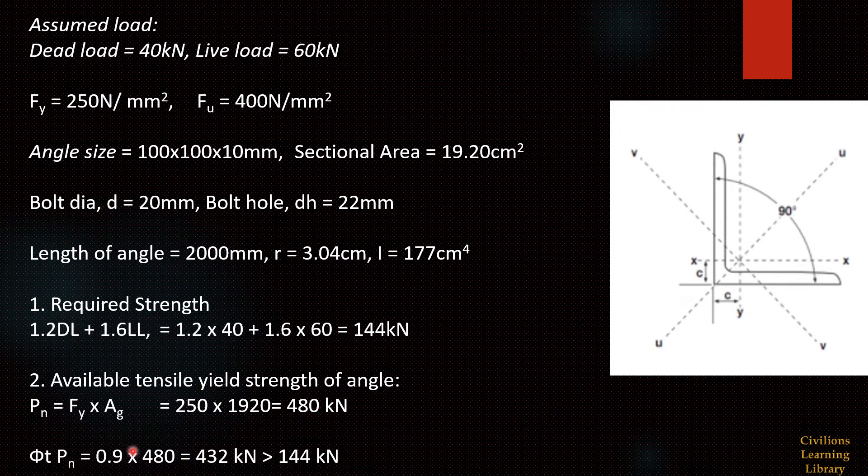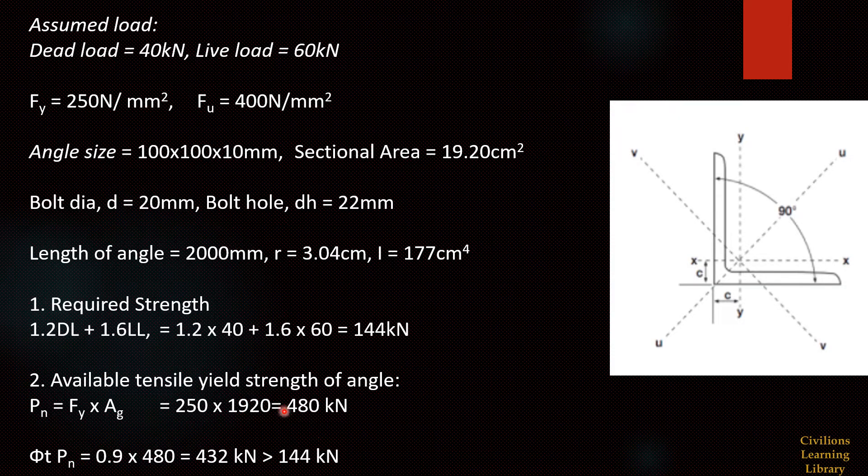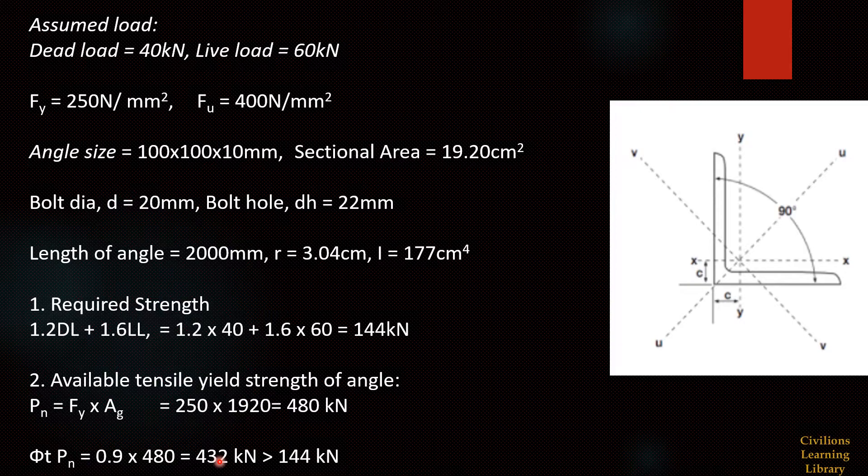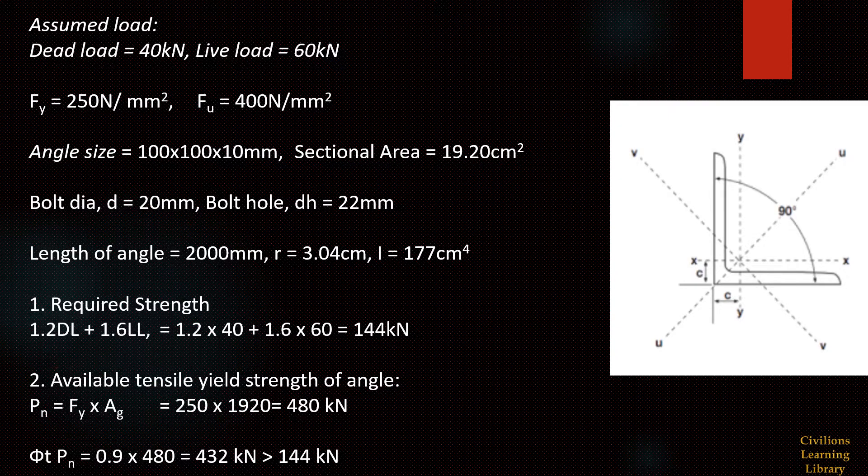Then we will multiply with the factor of safety. The factor of safety for LRFD is 0.9 for tensile yield strength calculation. So 0.9 into 480, the value is 432 kN which is greater than 144 kN. Hence this angle is okay for tensile yield strength.